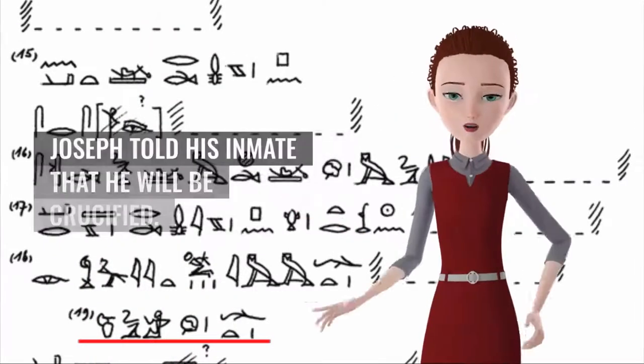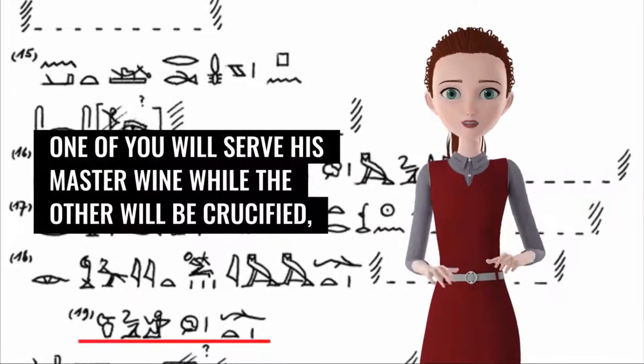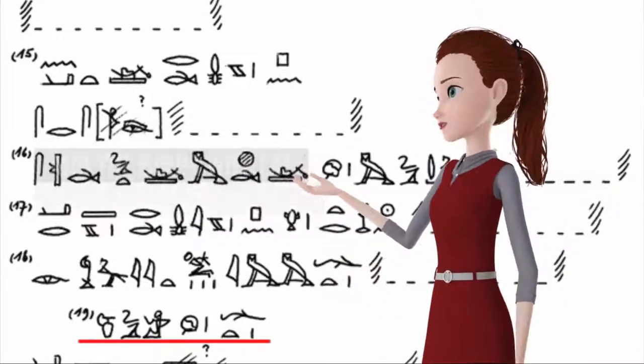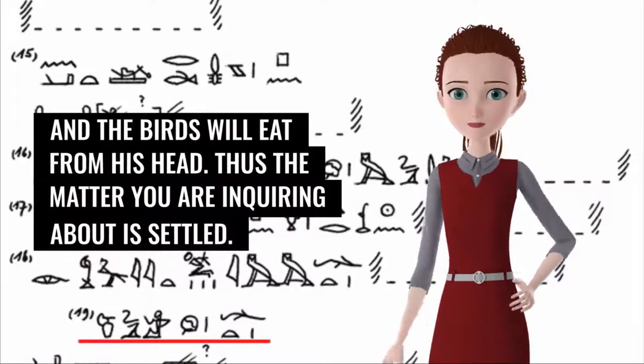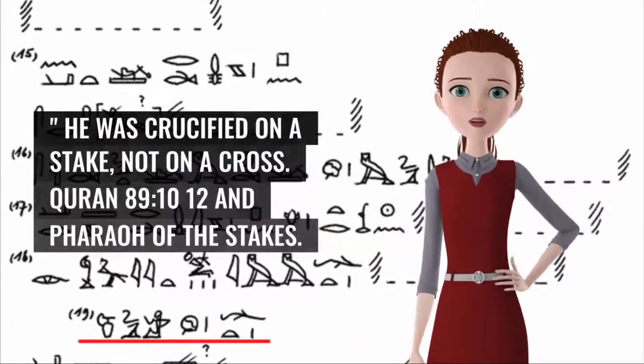Joseph told his inmate that he will be crucified. Quran 12:41: My fellow inmates, one of you will serve his master wine while the other will be crucified, and the birds will eat from his head. Thus the matter you are inquiring about is settled. He was crucified on a stake, not on a cross.